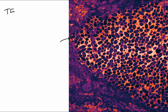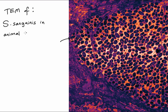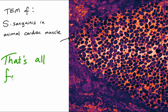Here is a very cool picture — a transmission electron microscope image of one of the Strep viridans species we discussed. Can you guess which one? It's Strep sanguineus. Where does Strep sanguineus cause infection? In the heart — this is a picture of Strep sanguineus in animal cardiac muscle. And that's all about Strep viridans. Thank you for watching and see you in our next video about the beta hemolytic streptococci.